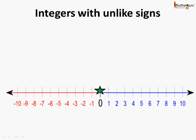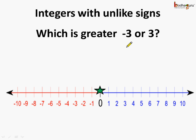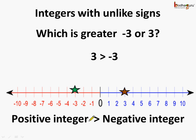Now, coming to integers with unlike signs — which is greater, minus 3 or 3? This is minus 3 and this is plus 3. Here, 3 lies on the right side of minus 3, so we can say 3 is greater than minus 3. In general, a positive integer is always greater than any negative integer.